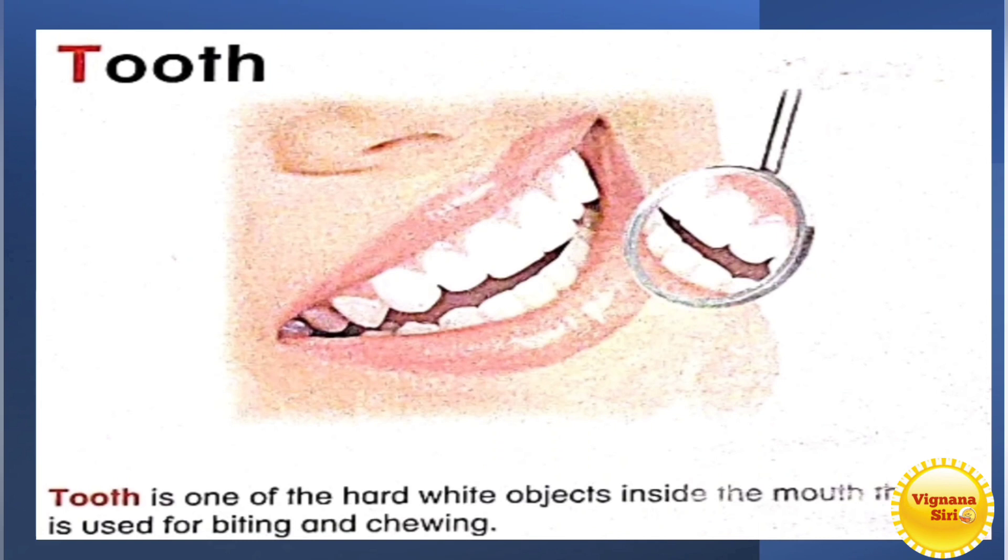The next part, what will be there in your mouth? Tooth, right? It's a hard white object inside the mouth used for biting and chewing. So this tooth is useful for biting and chewing. Tongue is for tasting.